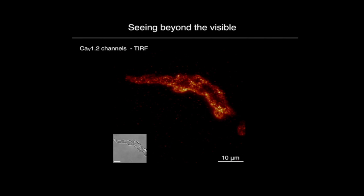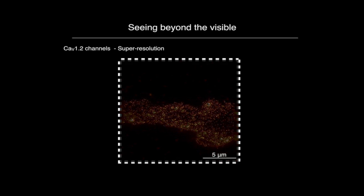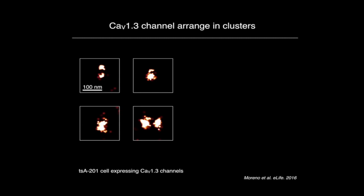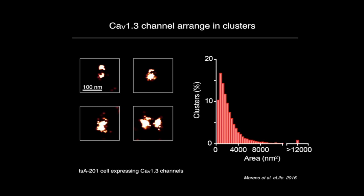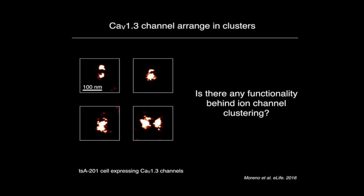We went from diffuse images to a highly resolved image with a resolution close to 20 nanometers, showing that in fact ion channels organize packed into clusters. These clusters are of different sizes, and when we quantified them we saw a wide range of cluster size. The question was: is there any functionality behind the clustering of ion channels?